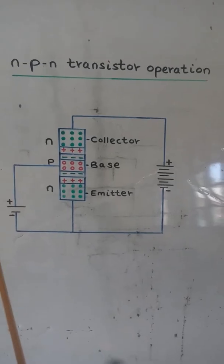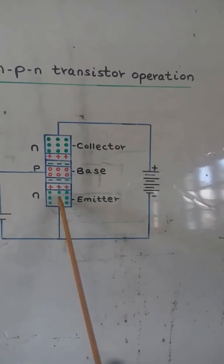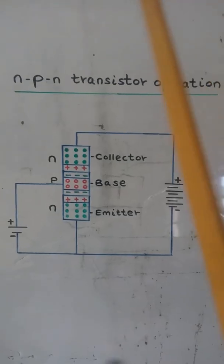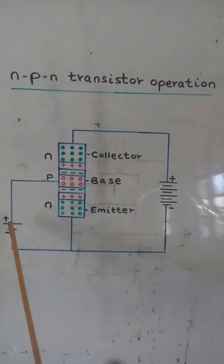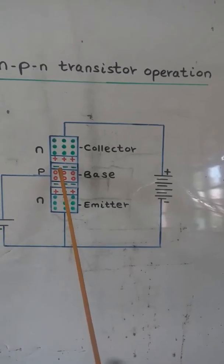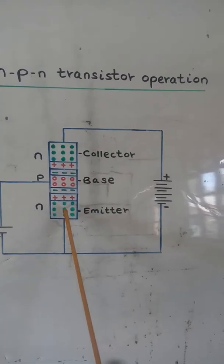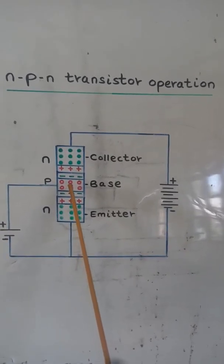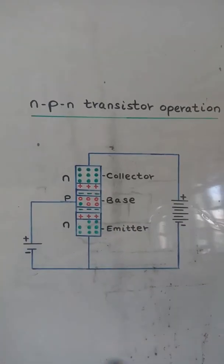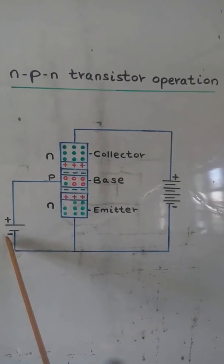The negative terminal of the battery repels the electrons found in the emitter, and the positive terminal of the battery repels the holes found in the base. Electrons from the emitter enter the junction to combine with the holes. An electron then leaves the negative terminal of the battery.